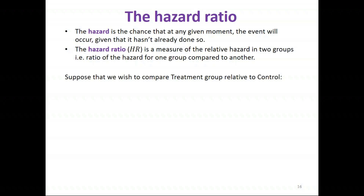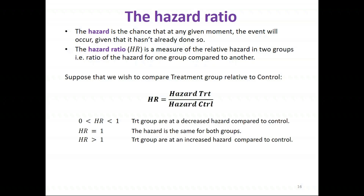For example, if we want to compare treatment to control looking at the risk of death, we can calculate the hazard ratio as the hazard in the treatment group at a particular time divided by the hazard in the control group at that time. It has a similar interpretation to an odds ratio or risk ratio, only we're talking about hazards rather than odds or risks.